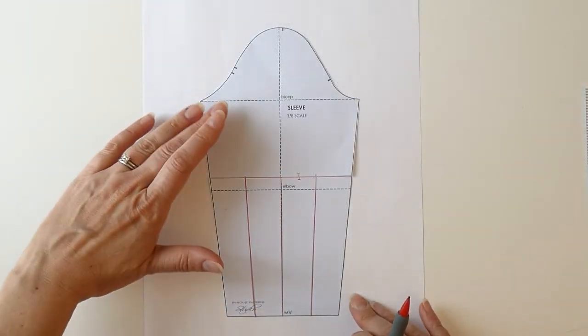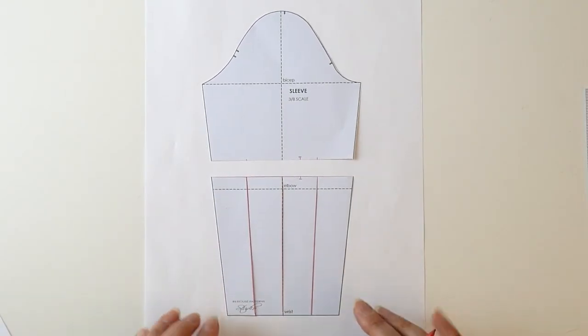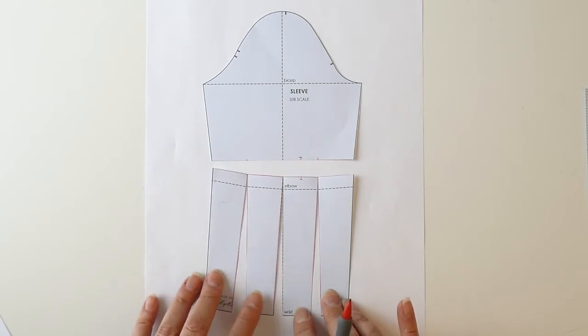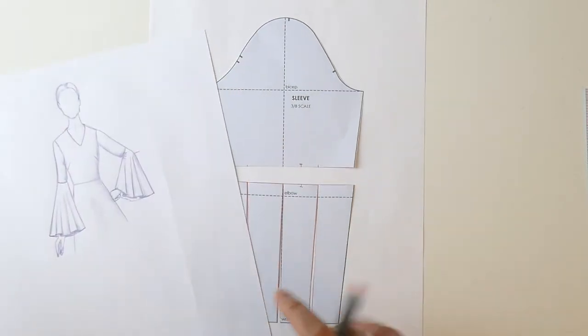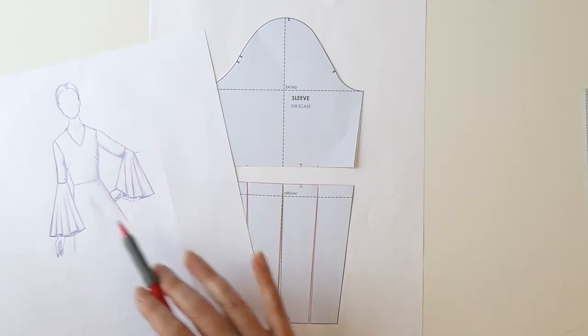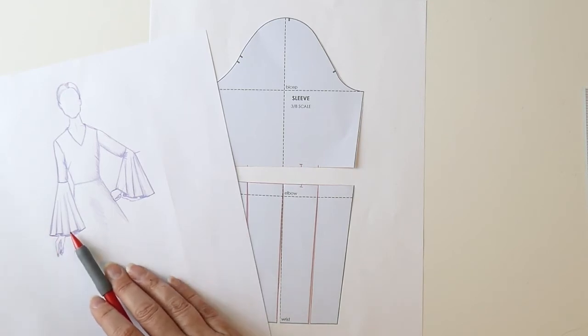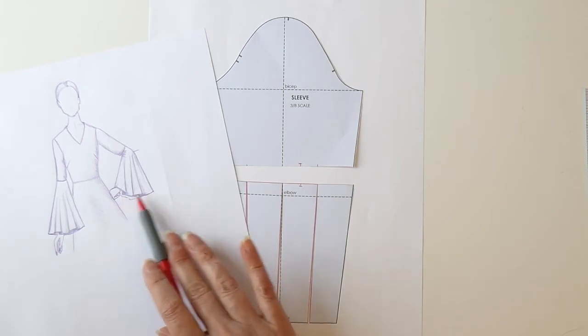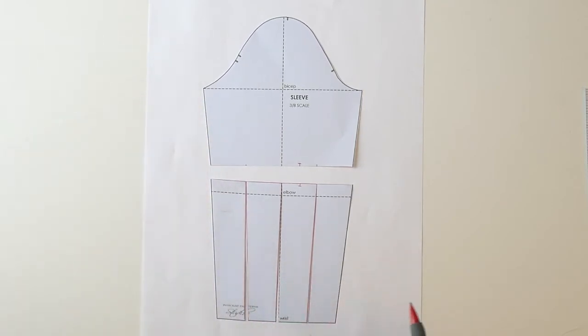Okay, so now we've slashed through all of those slash lines and I can separate my upper and lower sleeve. And I can also spread my pattern sections here on the lower sleeve, which is what is going to create the flare in the bottom part of the sleeve. So going back to the sketch here, I'm going to look at how much flare do I think that I have. And this of course just comes from experience and you'll realize how much you need to add the more you work with patterns. But until then we are going to use a pattern spread of about three inches per slash line in order to get our flare.